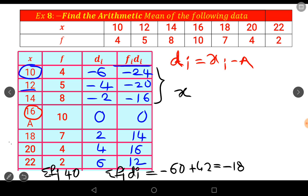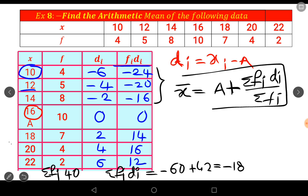Here the formula is changed. X̄ is equal to, before in the simple method, sigma f_i x_i by sigma f_i. Here, A plus sigma f_i d_i by sigma f_i. A plus sigma f_i d_i by sigma f_i. Substitute the values.